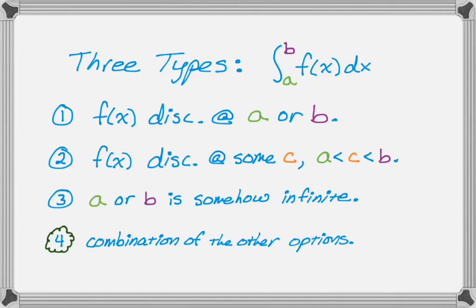So maybe you have a combination of 1 and 2, or a combination of 2 and 3. If you think about it, having a combination of 1 and 3 is kind of weird. But anyway, this video is about option 3 here, so we're going to have some infinite bounds.